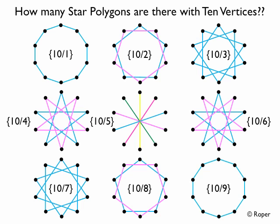Here we have 10 vertices with each point connected to the next point — that's 10,1. We have 10,2 with 10 vertices equally spaced on a circle with every second point connected. 10,3 would be every third point connected, 10,4 every fourth, 10,5 every fifth, 10,6 every sixth, 10,7 every seventh, 10,8 every eighth, and 10,9 every ninth point connected. So let's look at these individually, starting with 10,1.